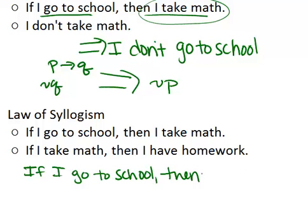Because if I go to school, then I take math. And if I take math, I have homework. So if I go to school, I have to have homework. There's no way around it. So this is combining sort of two sentences together.